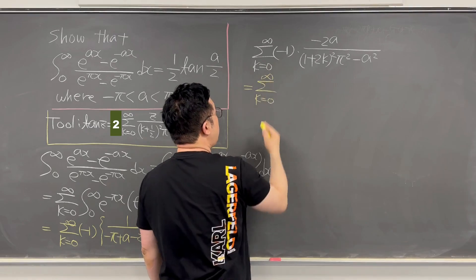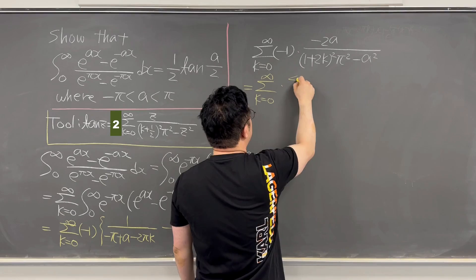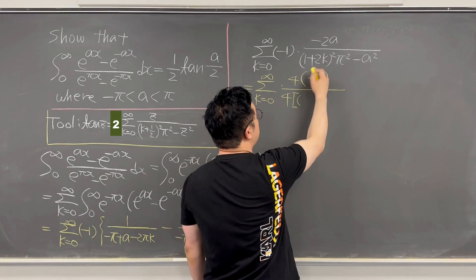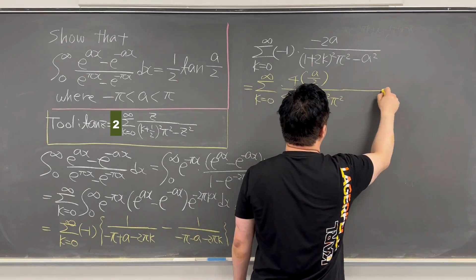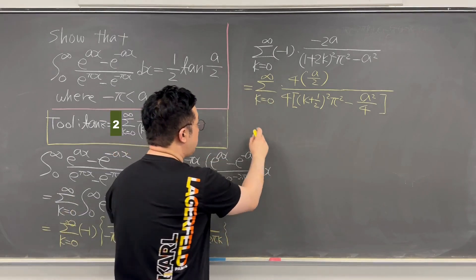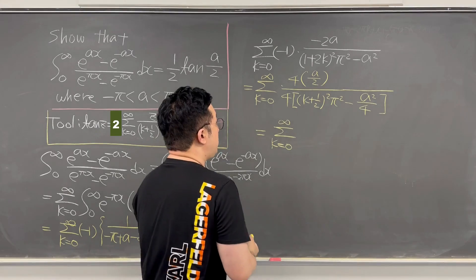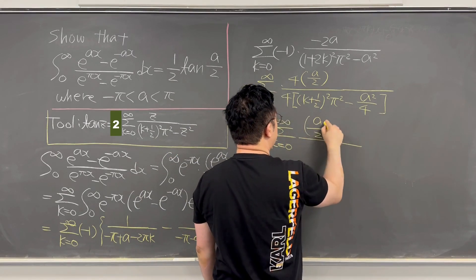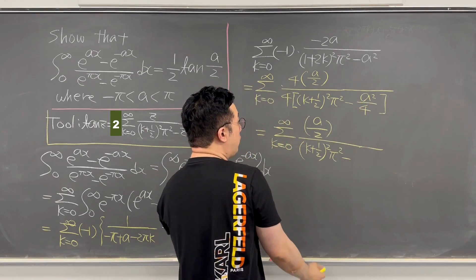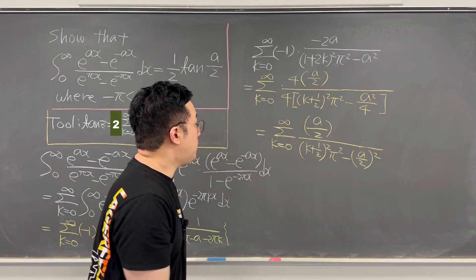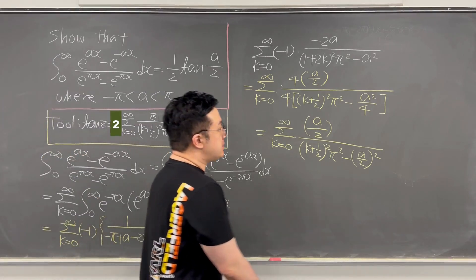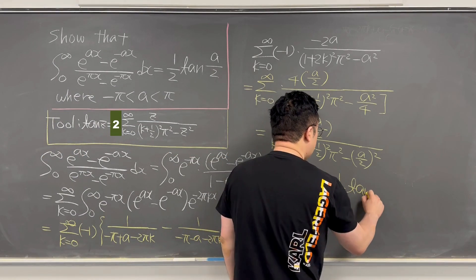Using the same strategy as the previous one, we rewrite this as summation from k=0 to infinity of positive 4(a/2) over 4[(k+1/2)²π² − (a/2)²]. After canceling terms, this becomes summation from k=0 to infinity of (a/2) / ((k+1/2)²π² − (a/2)²). Using the tangent tool — tan(z) = 2 times summation from k=0 to infinity of z / ((k+1/2)²π² − z²) — this expression equals 1/2 times tan(a/2).